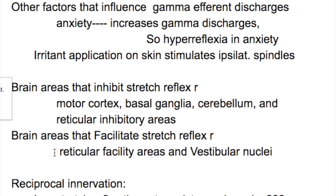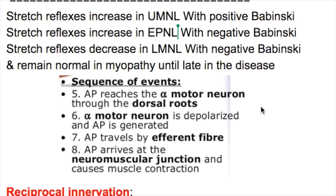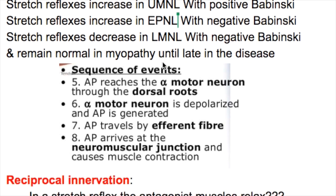Brain areas that facilitate the stretch reflex are the reticular facilitatory areas and vestibular nuclei. The stretch reflex increases in upper motor neuron lesions with a positive Babinski sign. The stretch reflex increases in extrapyramidal disorders with a negative Babinski. The stretch reflex decreases in lower motor neuron lesions with a negative Babinski, and remains normal in myopathy until late in the disease. The sequence of events: an action potential reaches the alpha motor neuron through the dorsal route; the alpha motor neuron is depolarized; action potential travels efferent fibers, arrives at the neuromuscular junction, and causes muscle contraction.